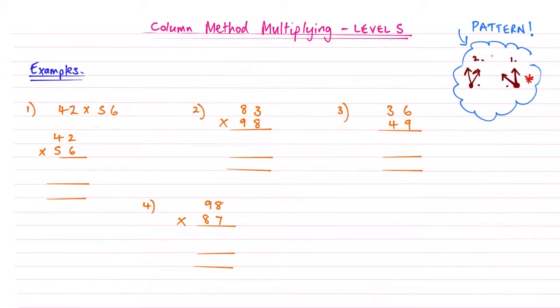In level 4, we introduced the pattern to follow for the column method for multiplication. Level 5 just expands on that. So without further ado, let's crack on.